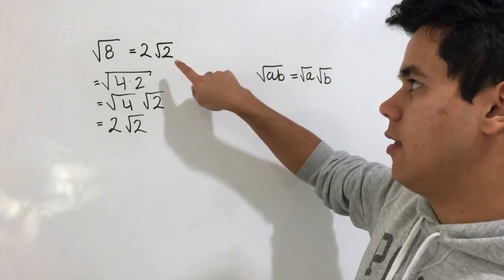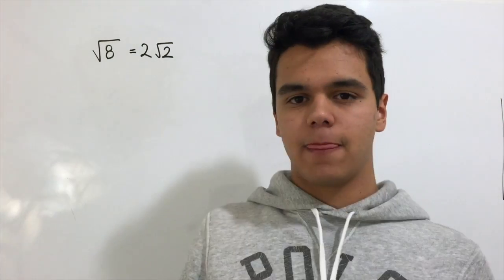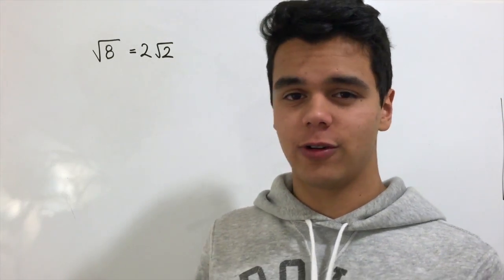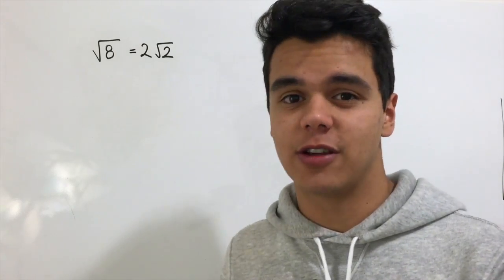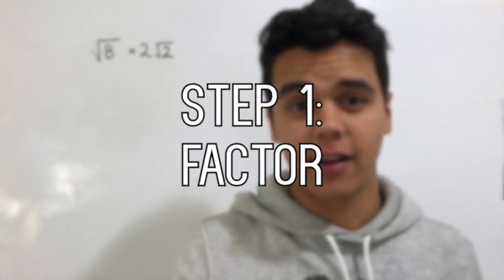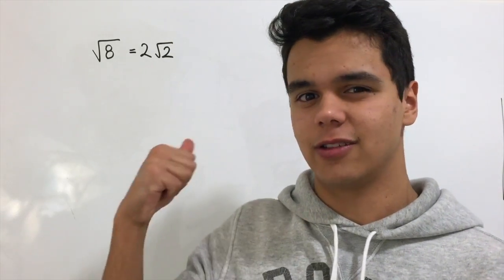So it's pretty easy. There's two steps that you have to follow in order to simplify radical expressions. Step one: factor. We're going to factor the number that is inside the radical into prime factors.